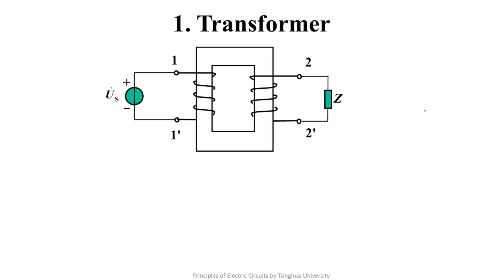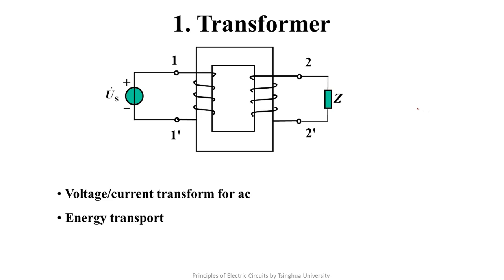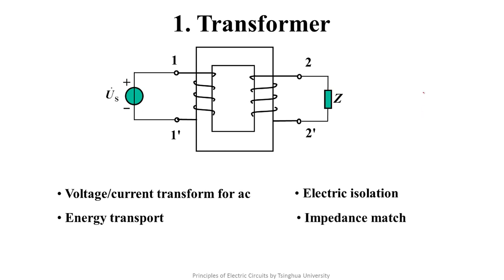The transformer can not only transmit energy but also signal. Its main functions can be summarized in four aspects. First, it can realize the change of magnitude of AC voltage or current. Second, it can be used for the transmission of power or energy. Third, because there is no electrical connection between the primary and secondary sides, it can be used for electrical isolation. Fourth, the transformer can be used as an impedance matching circuit.